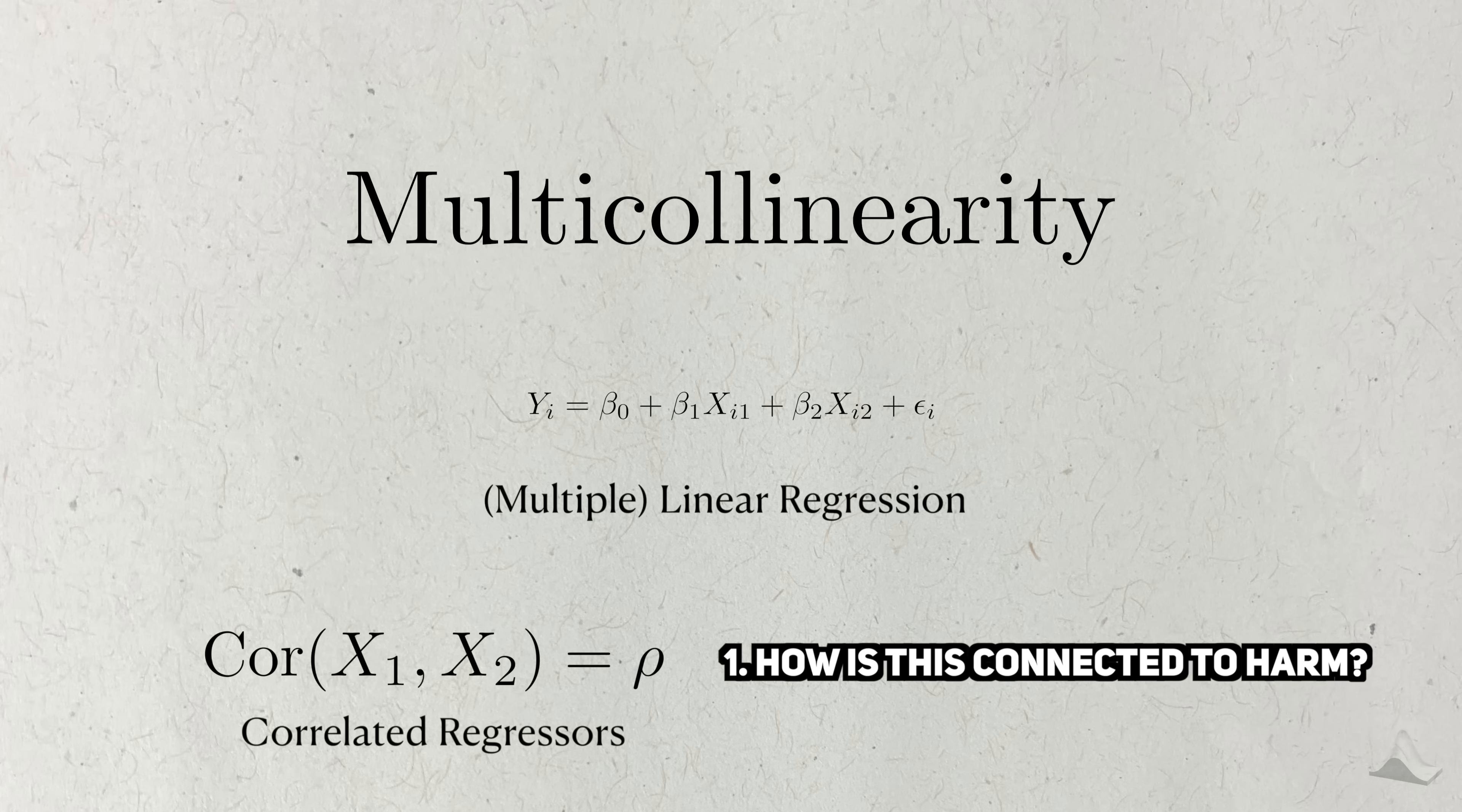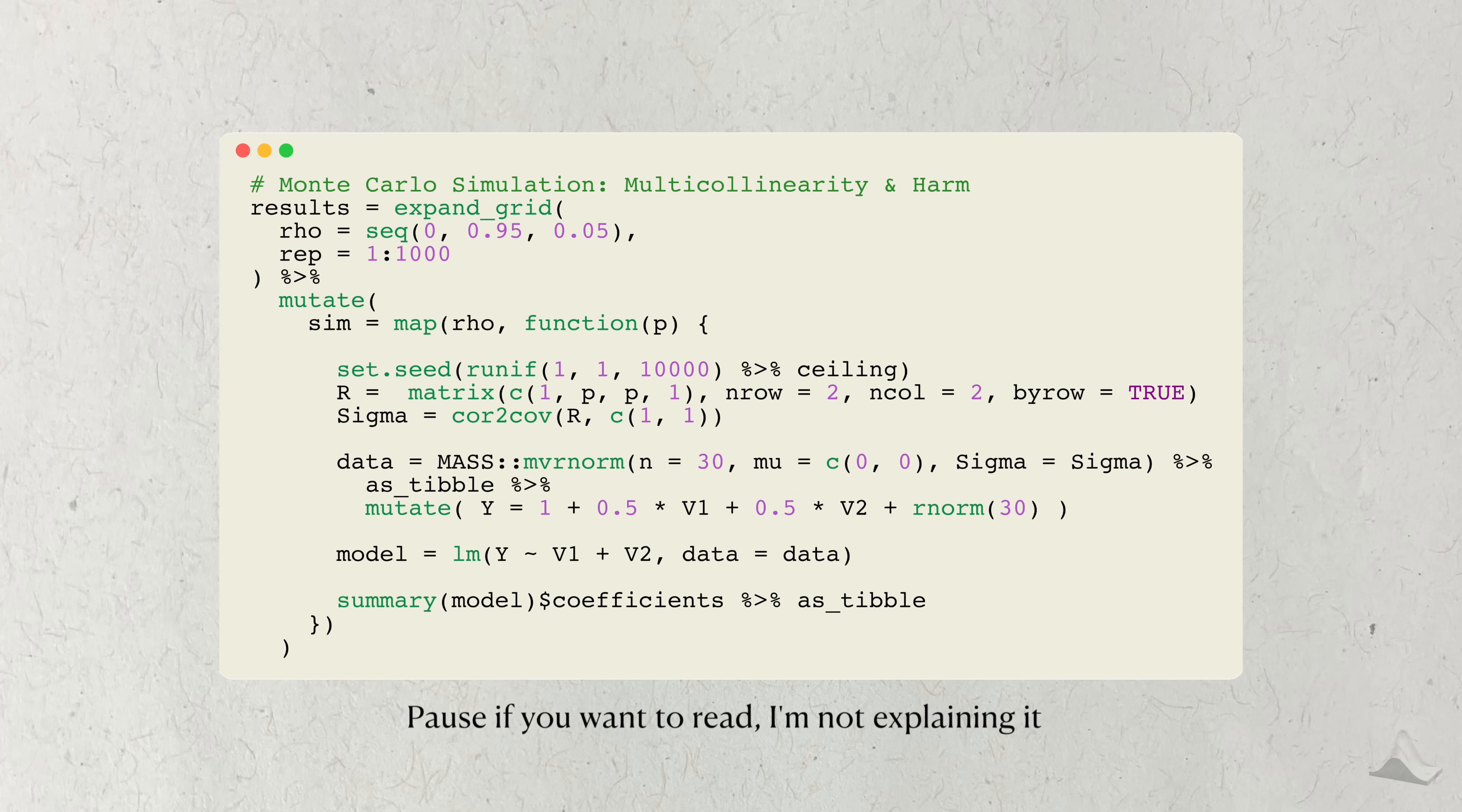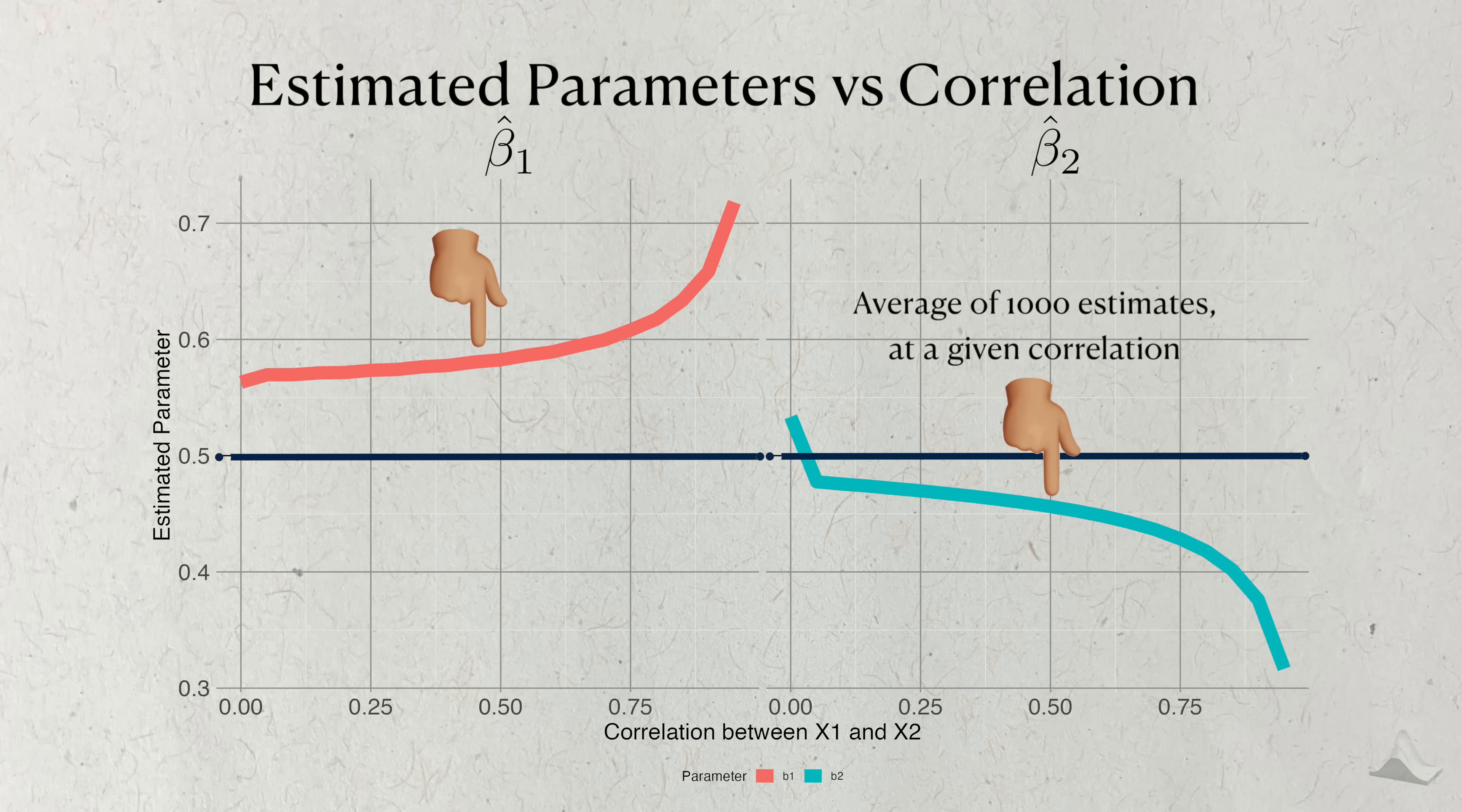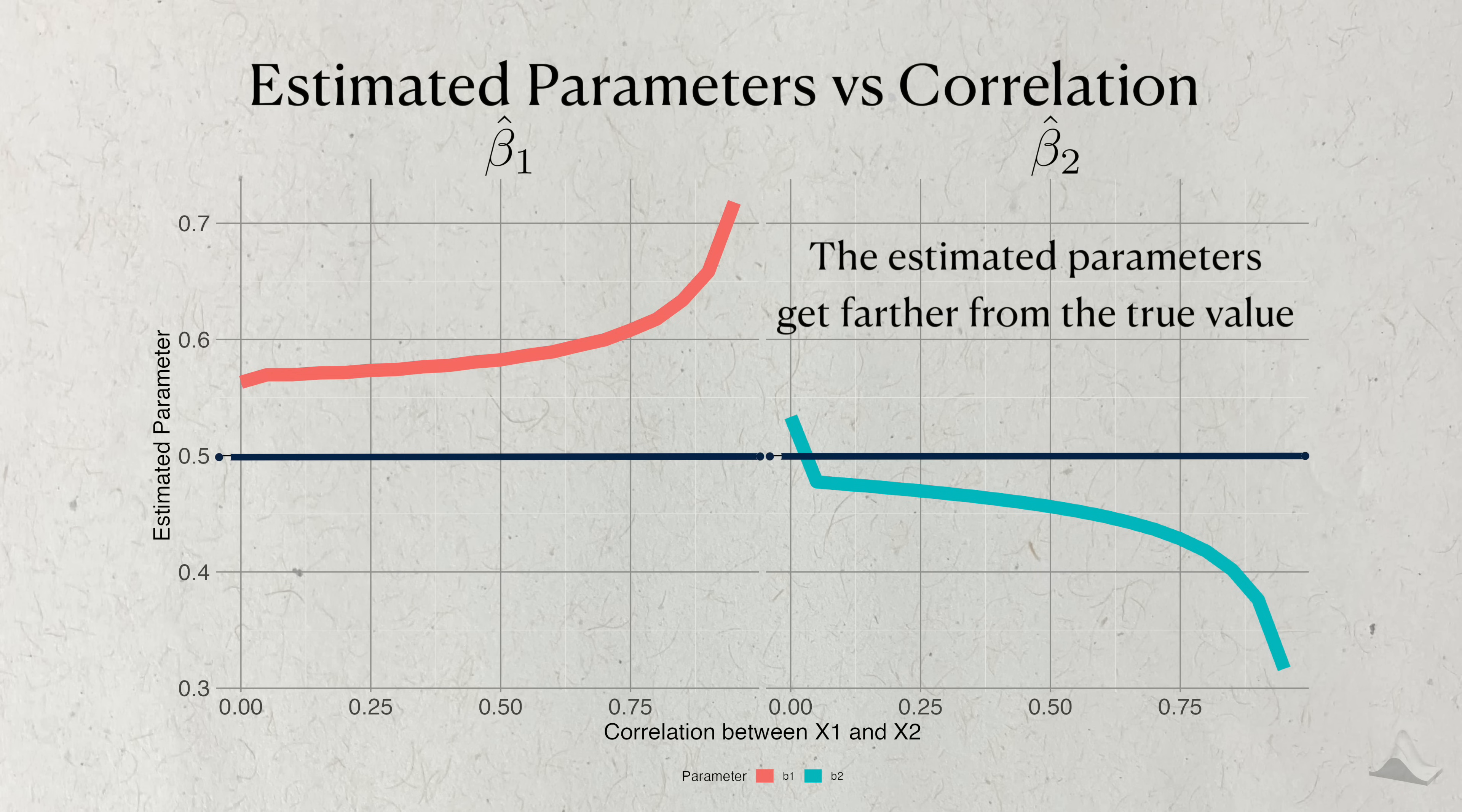Here's how multicollinearity influences the estimated regression parameters. This plot is for the first and this one is for the second. This black line indicates the true value for each parameter. While these red and blue lines show the average of 1000 simulations for a given correlation. You can see that, for a fixed sample size, as the correlation increases, the estimates also get worse, indicated by how far they're deviating from the true value. So one form of harm is worse estimates.